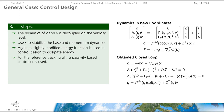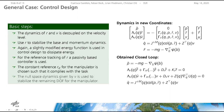For the reference tracking of R, a passivity-based controller is used. The constant reference for the manipulator center of mass is chosen such that it complies with the task. The null space dynamics given by the null space velocity v is used to stabilize the remaining degrees of freedom for the manipulator. This is achieved by projecting the gradient of the task potential u into the null space and adding damping.